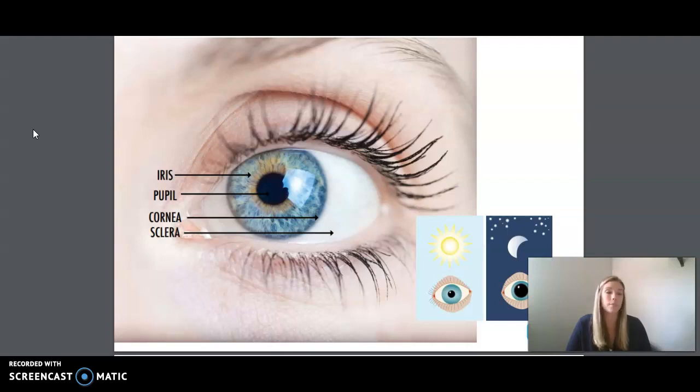At the center of the iris is a black circle. Do you see it? This dark circular hole, called the pupil, varies in size as it regulates the amount of light entering the eye. The muscles of the iris control the size of the pupil, tightening to make the pupil smaller in bright light and relaxing to make the pupil larger in dim light.